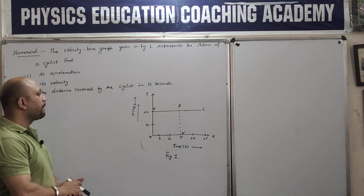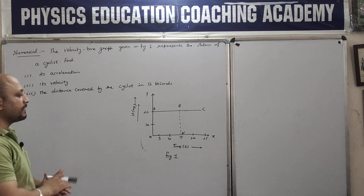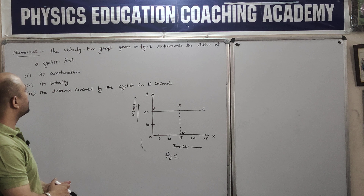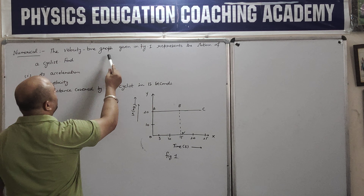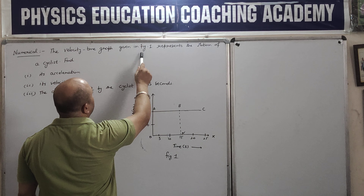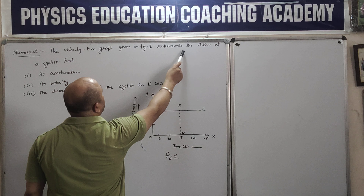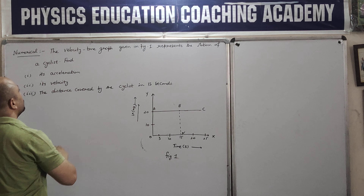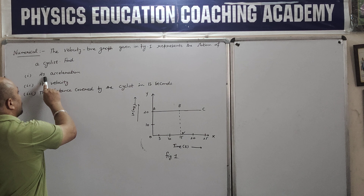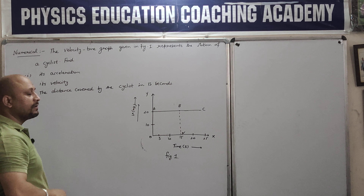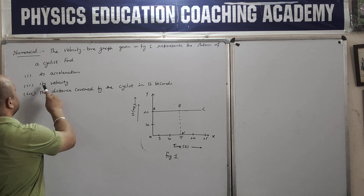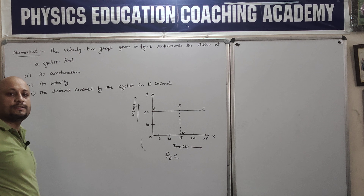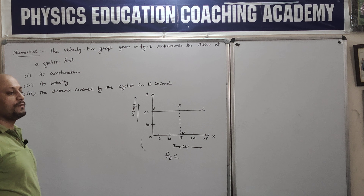This is a very important numerical. Let's see how we can solve it. The velocity-time graph given in Figure 1 represents the motion of a cyclist. We need to find: first, its acceleration; second, its velocity; and third, the distance covered by the cyclist in 15 seconds.